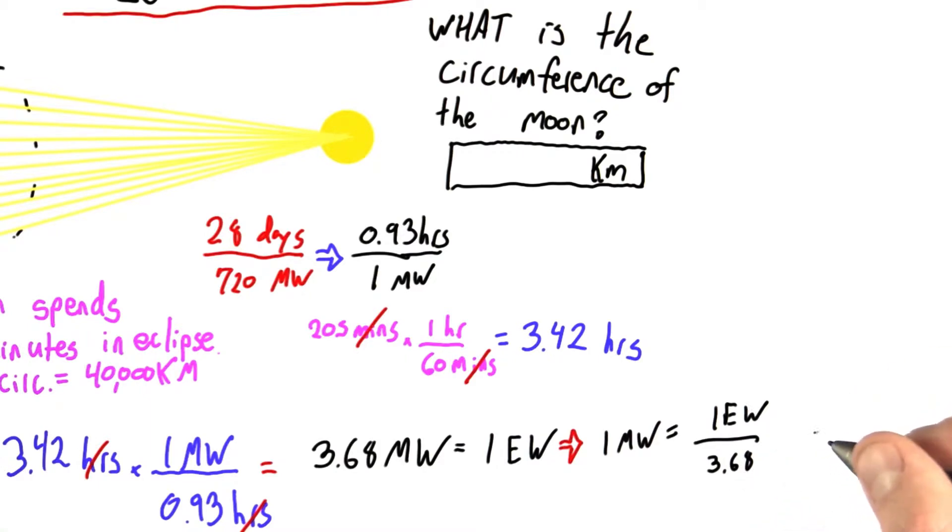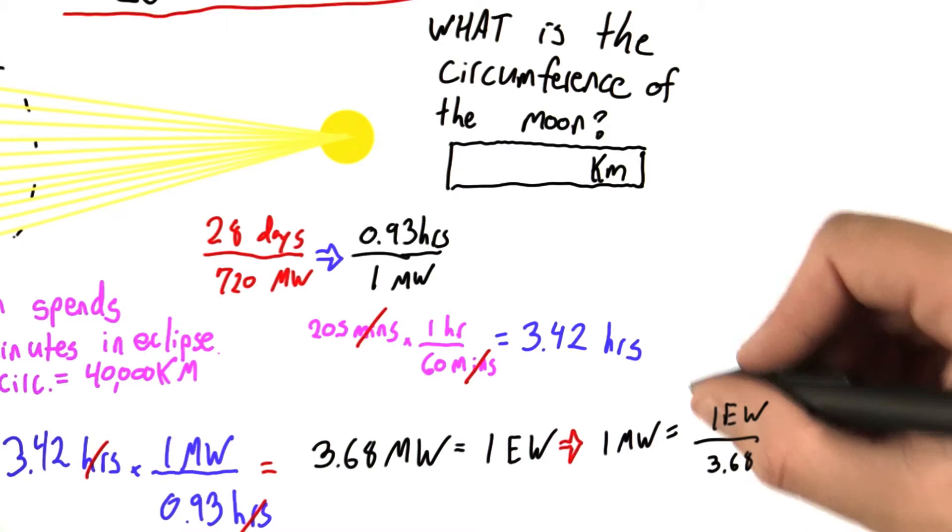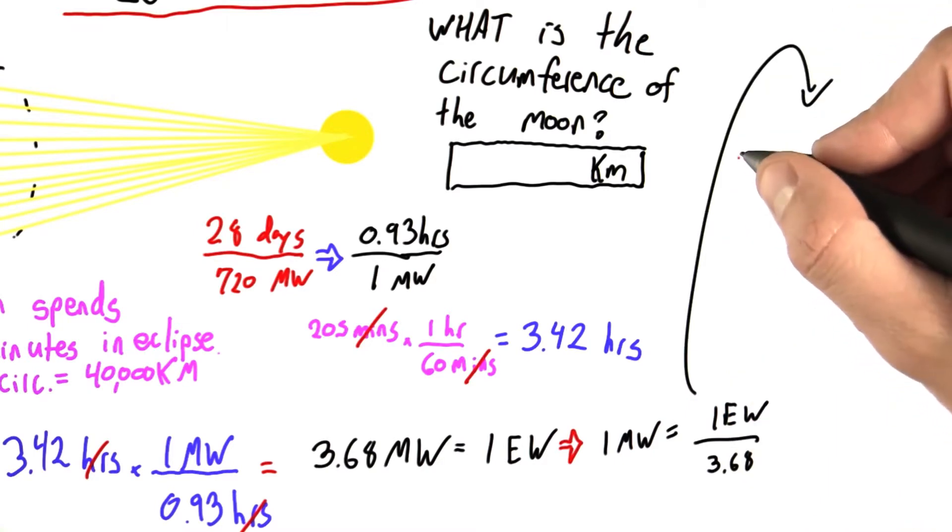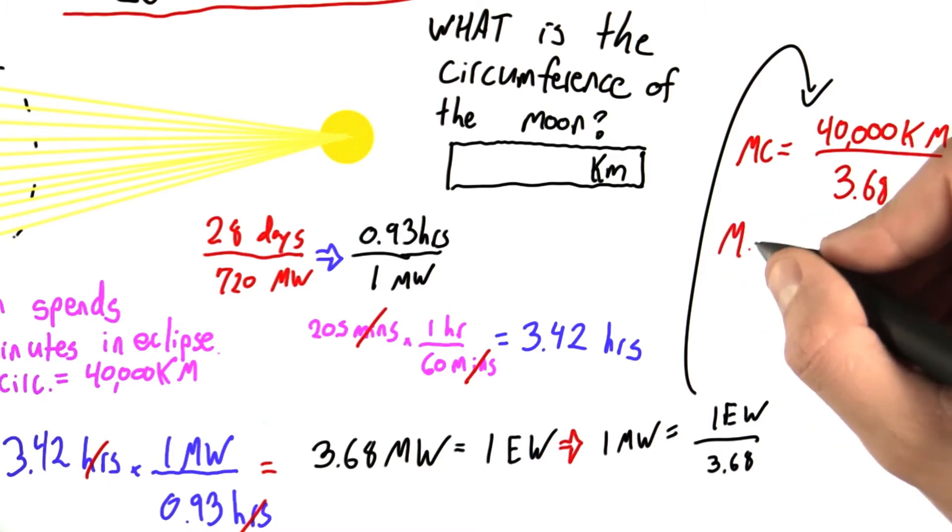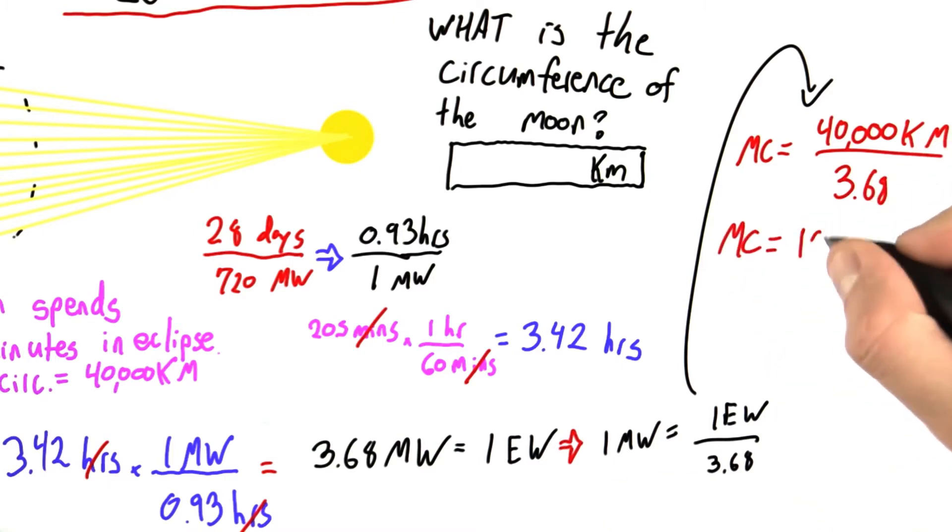I don't actually want width, I want circumference. So let's go over here and say the moon circumference, MC, is equal to, well, 1 earth circumference divided by 3.68. So that's going to be 40,000 km, that's the Earth circumference, divided by 3.68. And the circumference of the moon is about 10,900 kilometers.